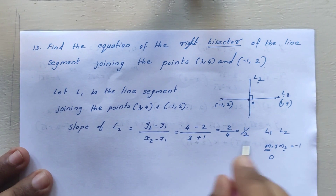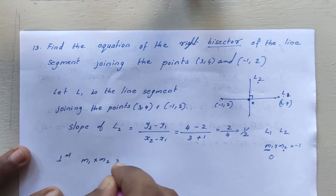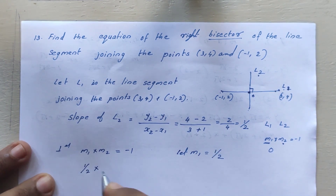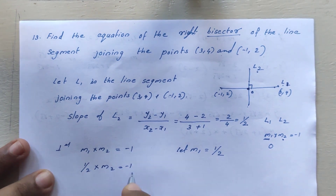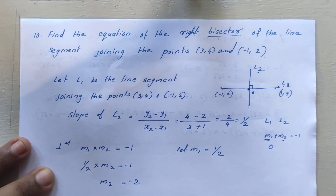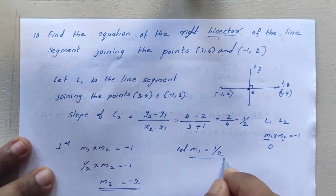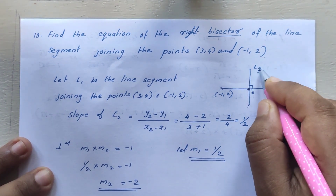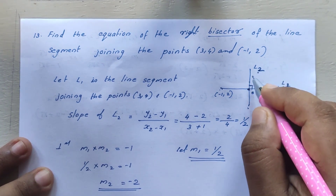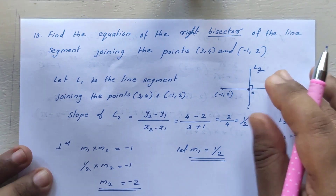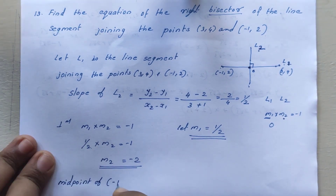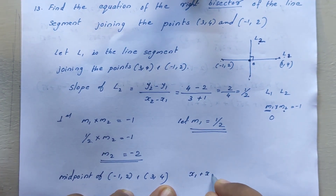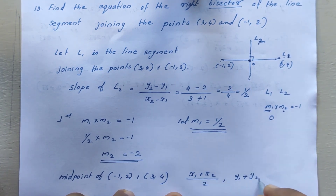For the perpendicular condition, m1 * m2 = -1. With m1 = 1/2, we get (1/2) * m2 = -1, so m2 = -2. The slope of the right bisector is m2 = -2.